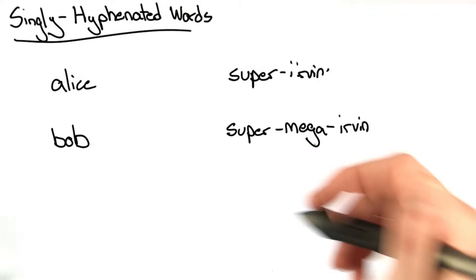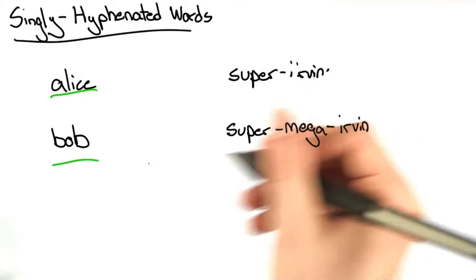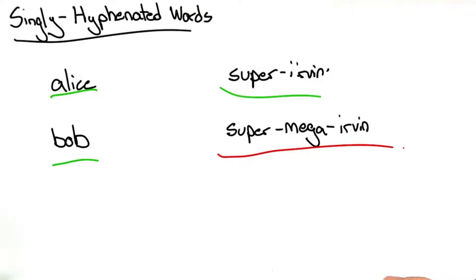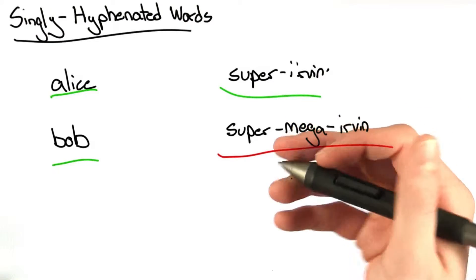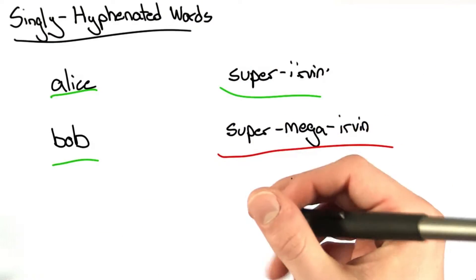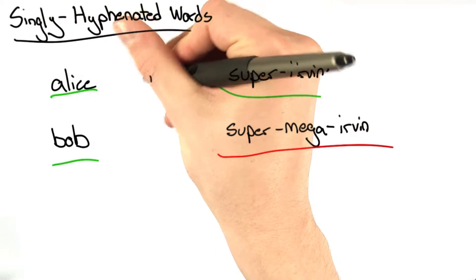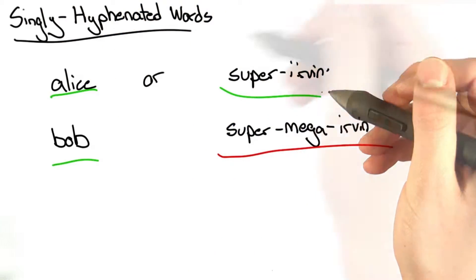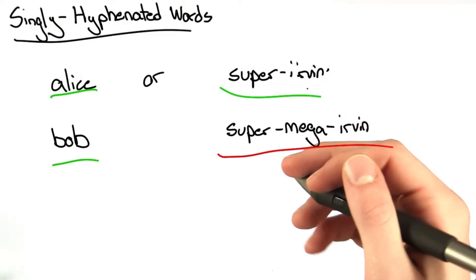So we need to write a regular expression that perfectly matches Alice, Bob, and super-urban, but doesn't match super-mega-urban. One way to think about it is we have two types of regular expressions: one that matches normal words, or one that matches a word with a single hyphen. Let's do one at a time.